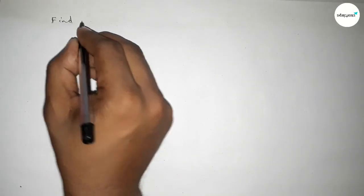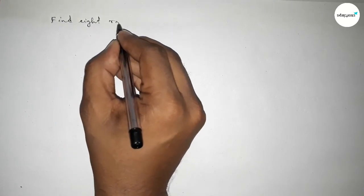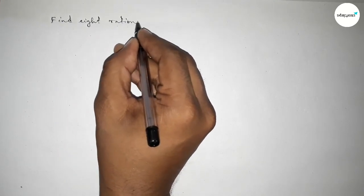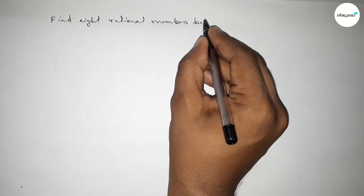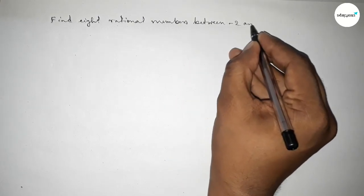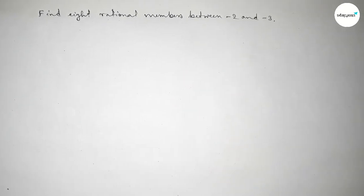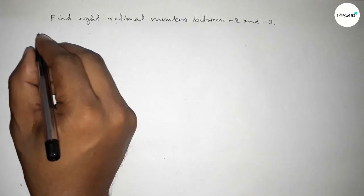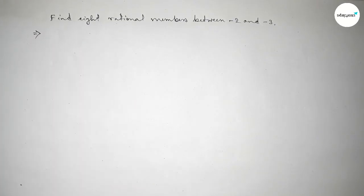Hi everyone, welcome to essay share classes. Today in this video we have to find out eight rational numbers between minus two and minus three. So let's start the video. First of all, write down here the given two numbers.